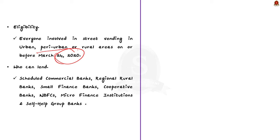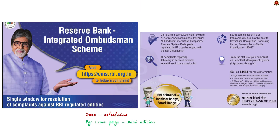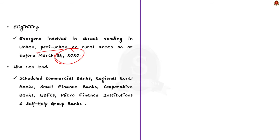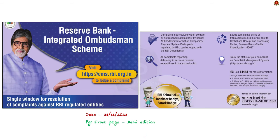When the scheme was implemented in 2020, the government planned to discontinue it by March 2022, but it has now been extended to December 2024. These are some important points to remember about PM SVANidhi. With these points learned, let us move on to the next news article discussion.